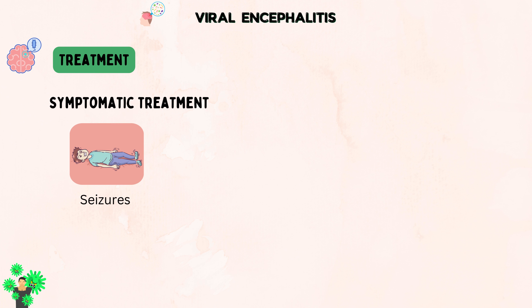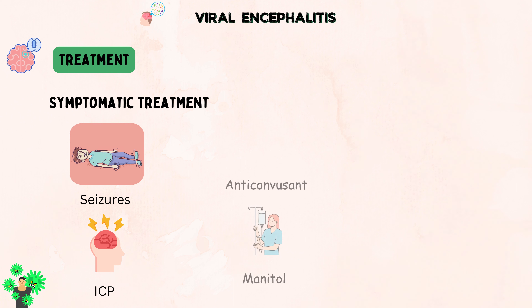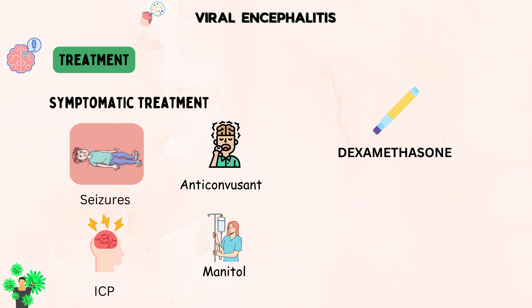Specific symptoms such as seizures, increased intracranial pressure, or other neurological complications are treated symptomatically. Medications to control seizures, reduce brain swelling, or manage other neurological issues might be administered. In some cases, corticosteroids like dexamethasone might be used to reduce brain inflammation and swelling, although their effectiveness in viral encephalitis treatment is debated and not universally recommended.